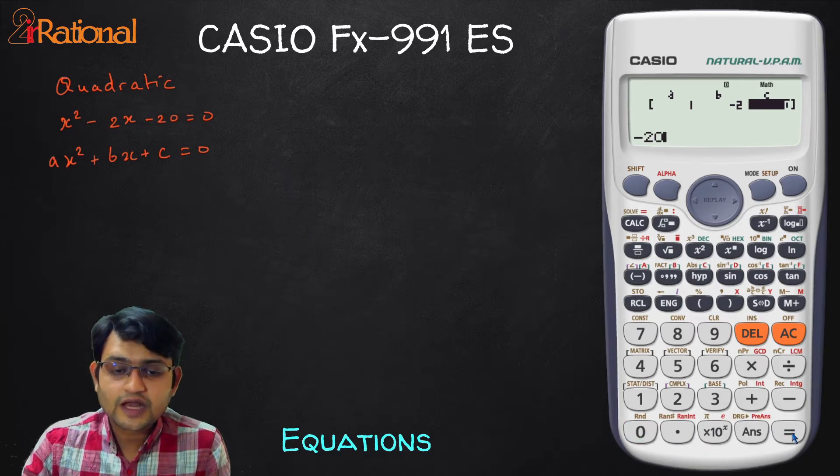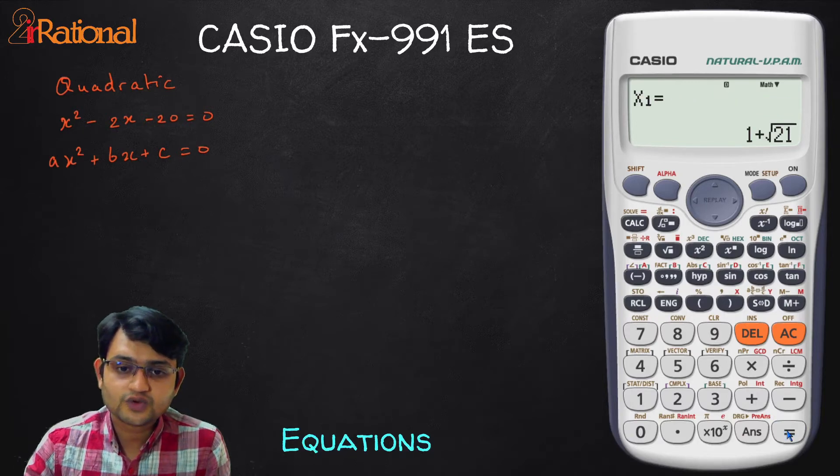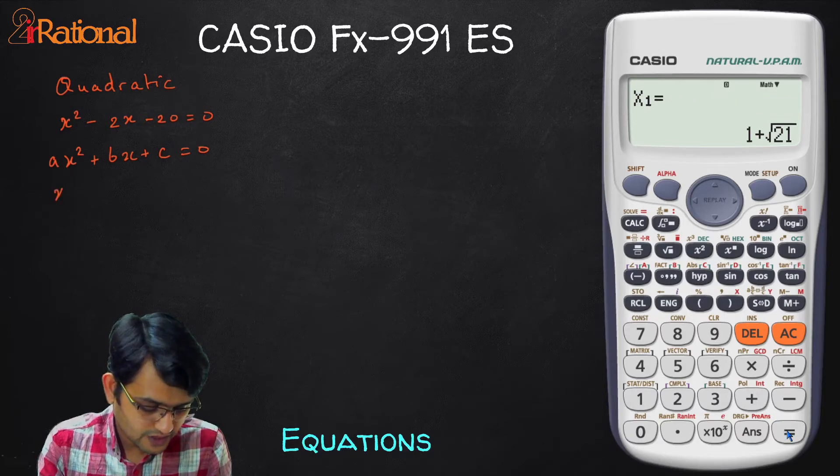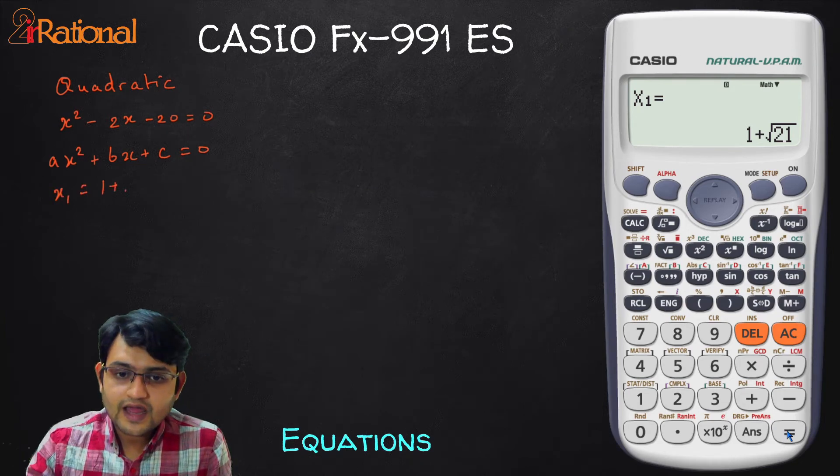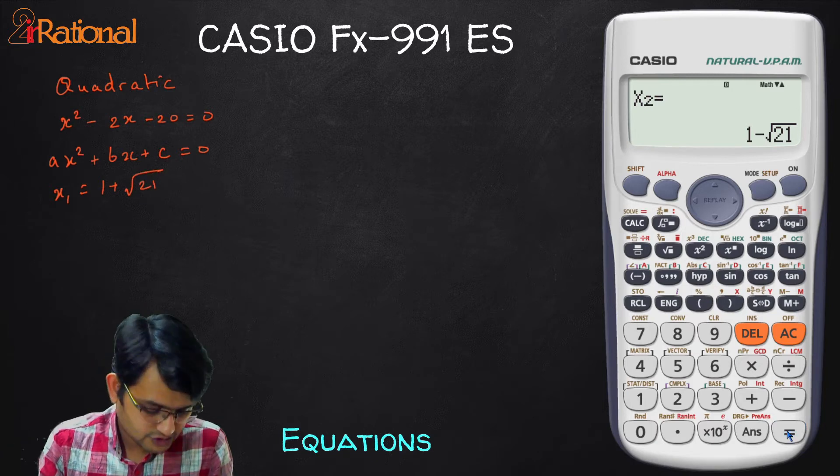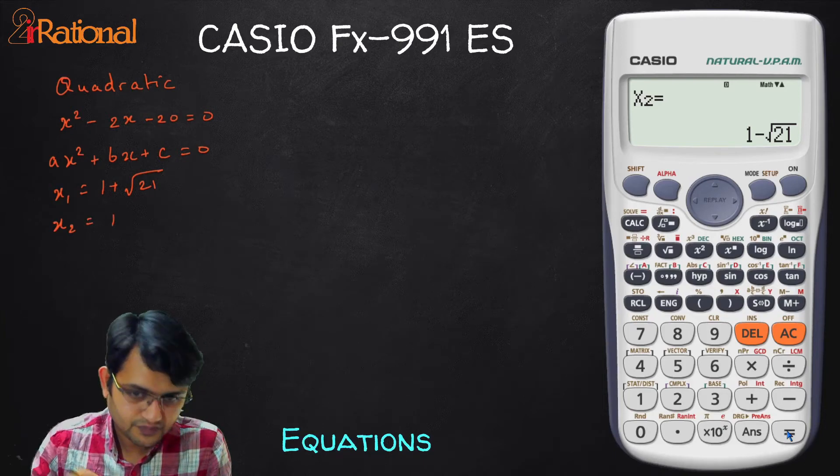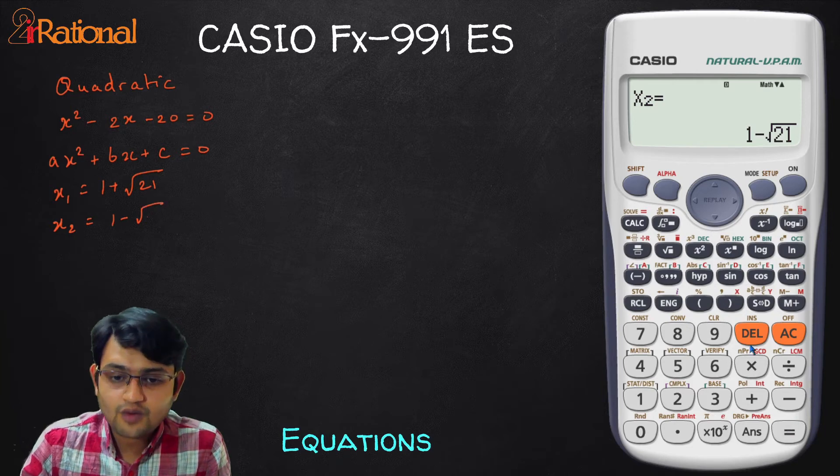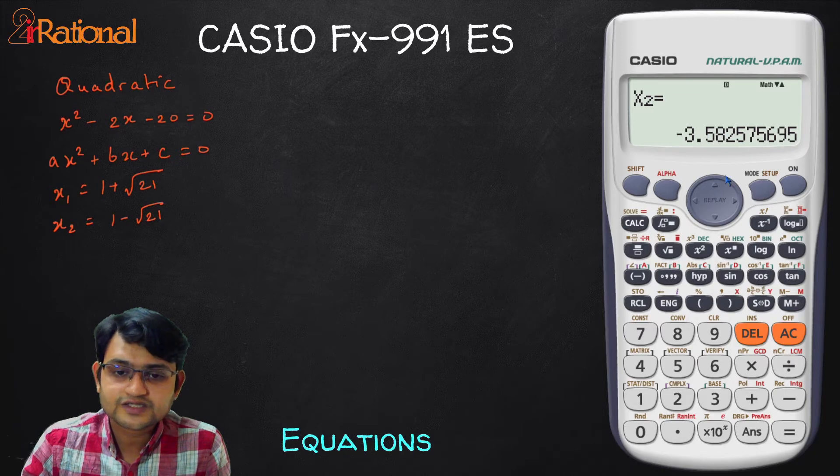Now after doing that all I have to do is press equal to and I can check my A, B, C values and then press again equal to it gives me value of X1. That would be 1 plus root of 21 and if I press equal to again it gives me value of X2 second root. That would be nothing but 1 minus root of 21. If you want it in decimal form all you have to do is press this SD and you get this value in decimal.